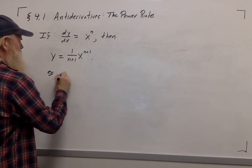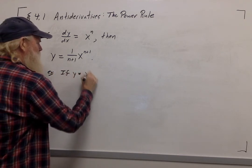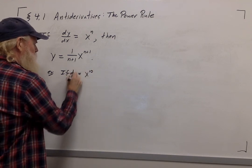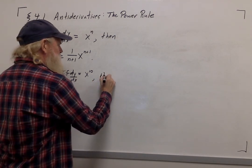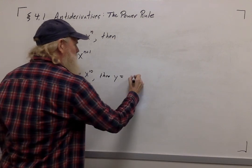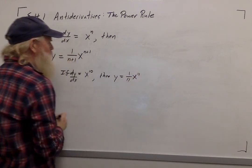So, quick example. If the derivative of y with respect to x is x to the 10th, then y is equal to x to the 11th times 1 over 11.